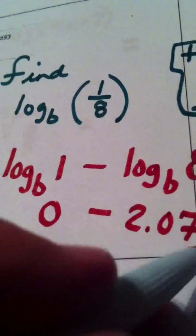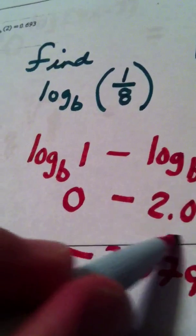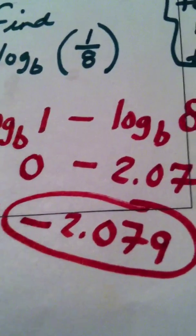And then 0 minus this would turn out to be that. So there is my answer approximated to the nearest thousandth like they wanted.